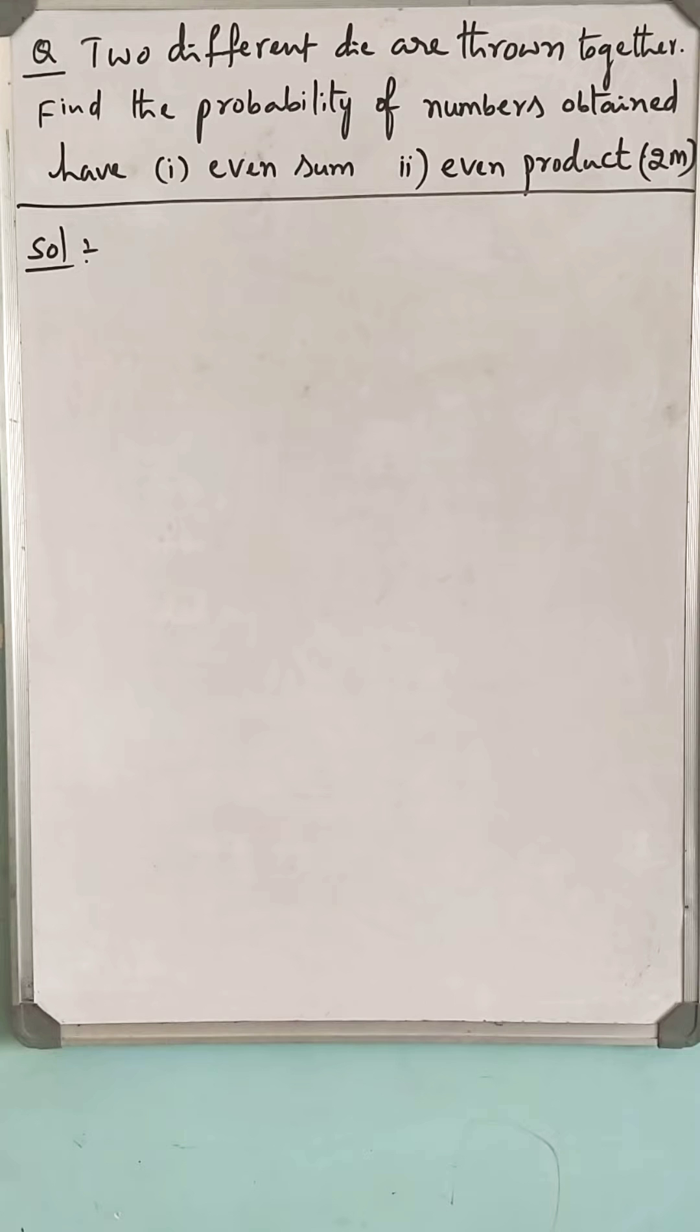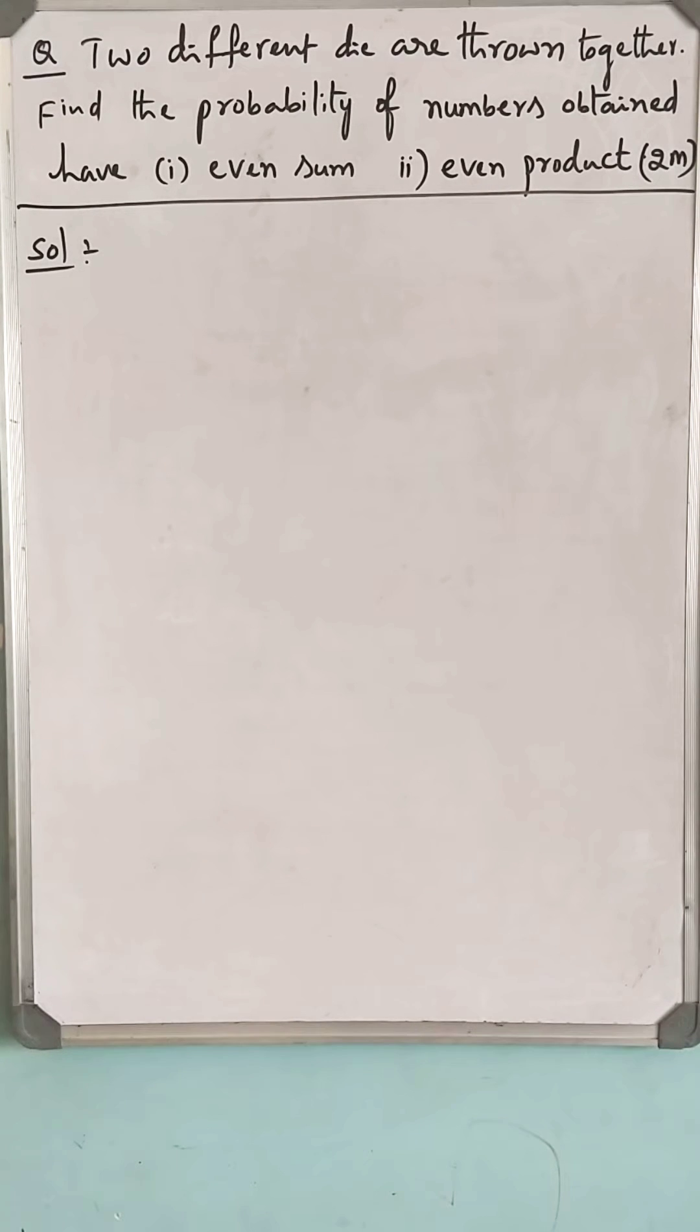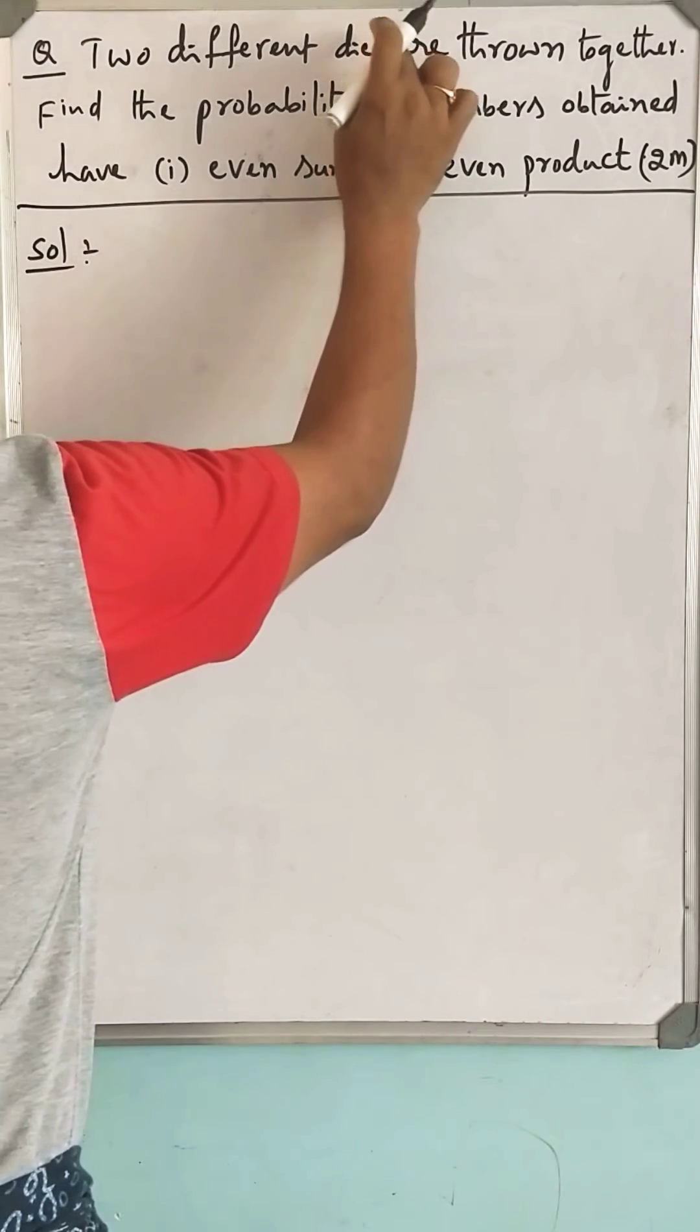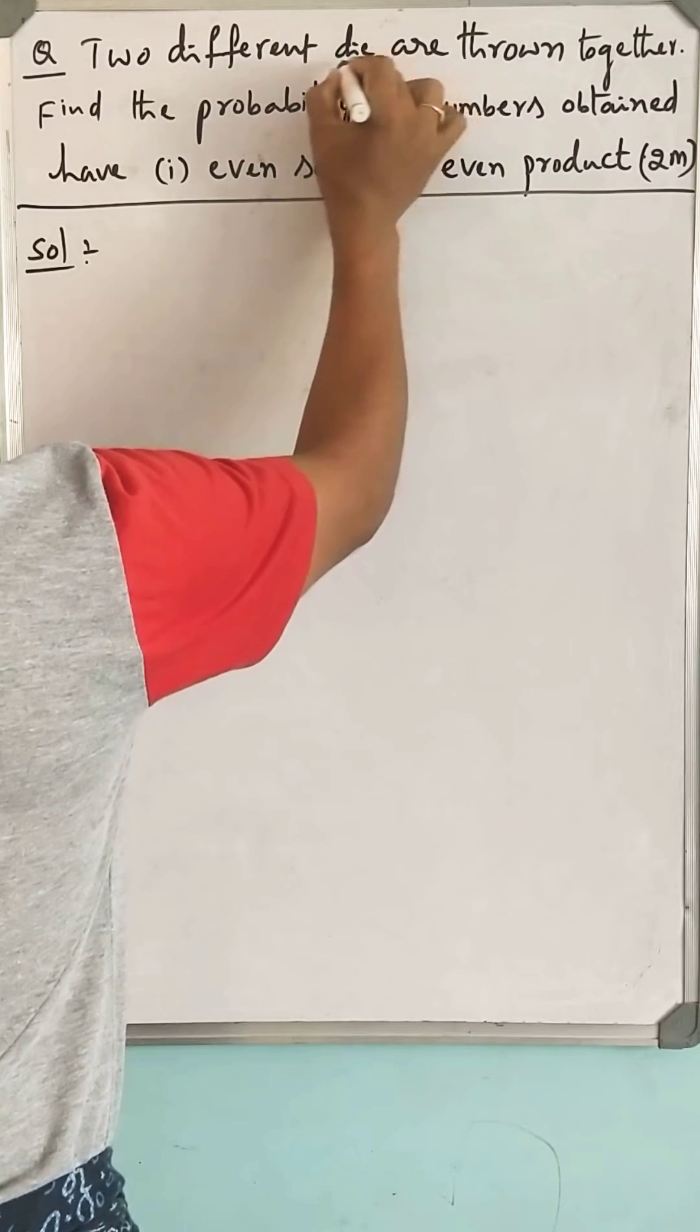Two different dice are thrown together. Find the probability of numbers obtained have (i) even sum, (ii) even product.